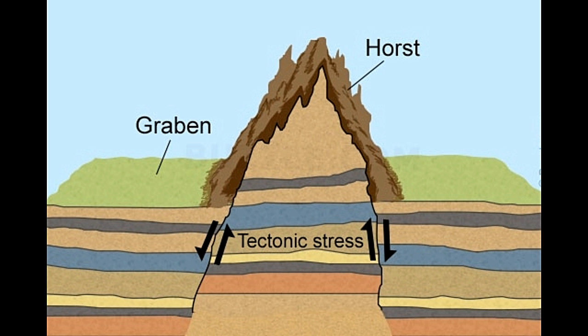Sometimes, the valley in the middle may eventually rise up higher than the adjacent cliffs, due to the displacement of land above it. Such mountains have steep cliffs on either side. A series of horsts and grabens can lead to a steeply undulating terrain. This type of landscape is found in central Europe, particularly northern France and the Black Forest in Germany.